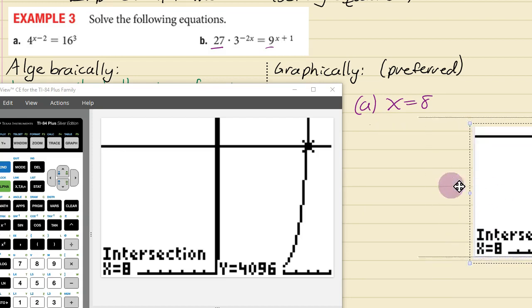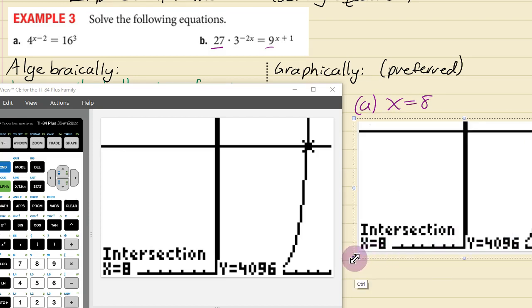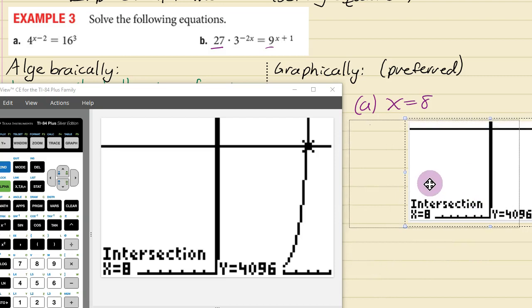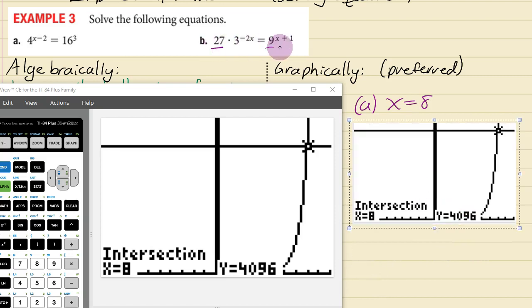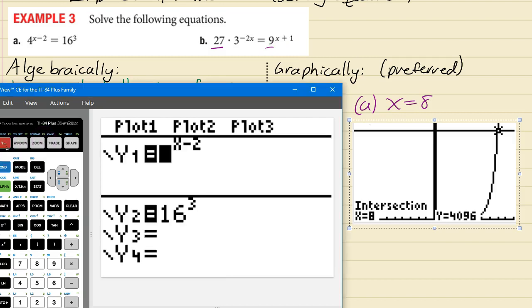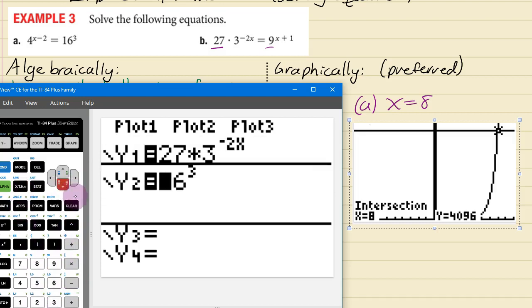And then for the other one we want to graph both of these. So I'm going to go back to the y equals. We want to graph 27 times 3 to the power negative 2x. And then the other one is going to be 9 to the power x plus 1.